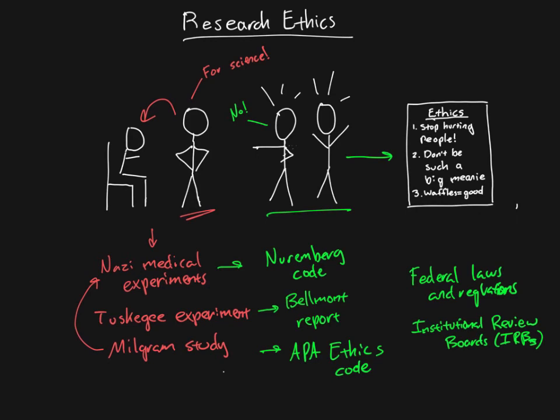Hopefully that gives you a little background in terms of where these things came from. Next we'll get into talking about what are some of the most important core principles common to all of these — the Nuremberg Code, the Belmont Report, and the APA Ethics Code.